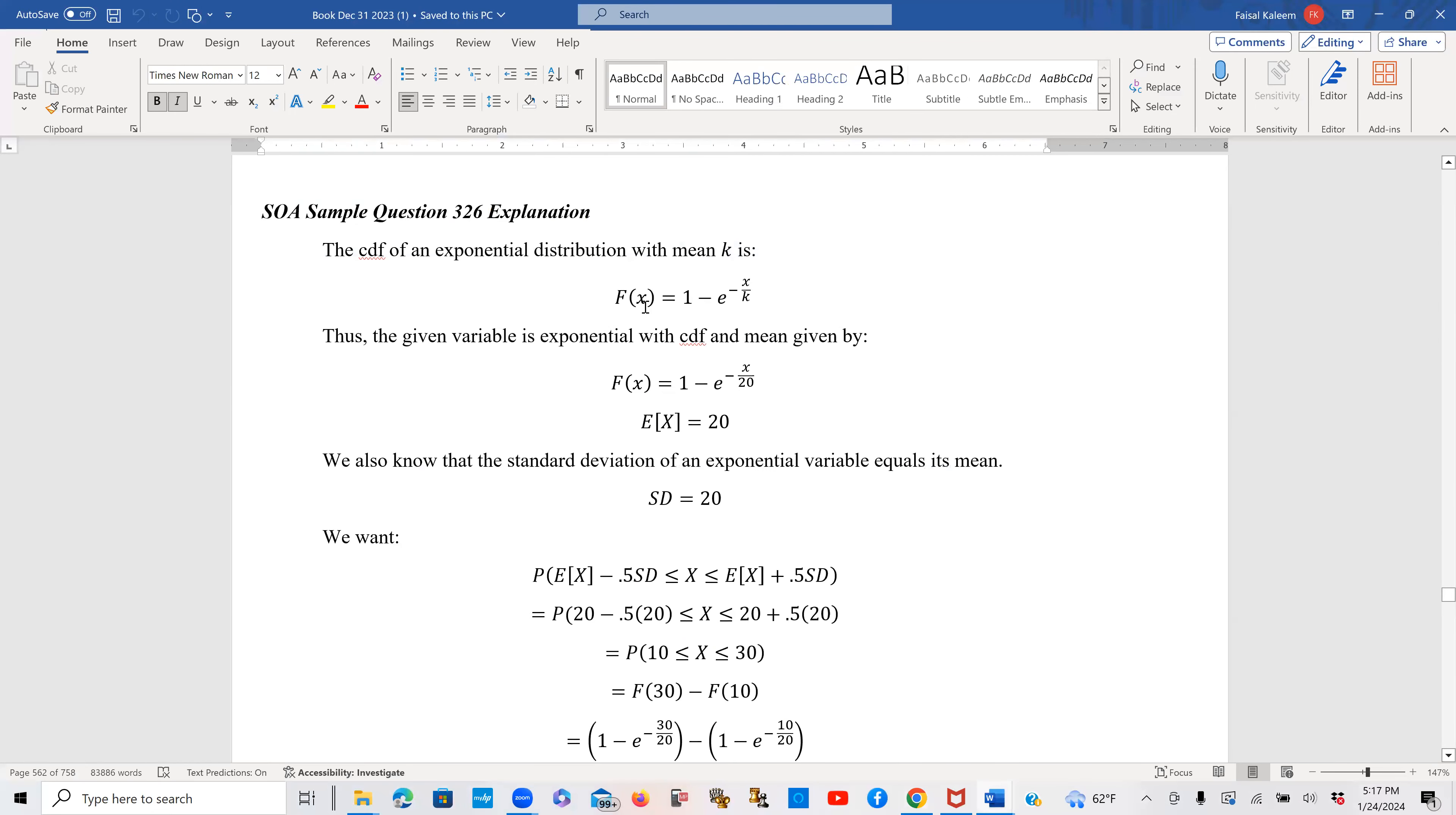So we know that the CDF of an exponential distribution with mean k is 1 minus e to the negative x over k. So in the variable that is given the mean is 20. So it would be 1 minus e to the negative x over 20. The expected value for the mean is 20.